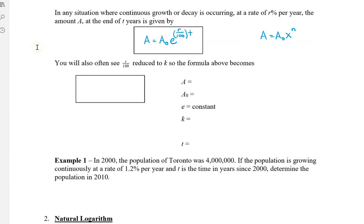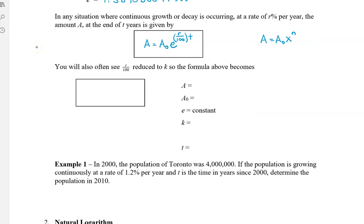Now in some textbooks or websites you will often see that r divided by 100 is reduced to k. So the formula then becomes a equals a naught times e to the kt.